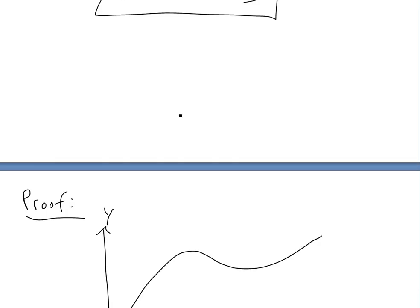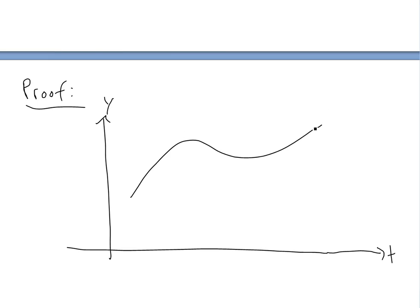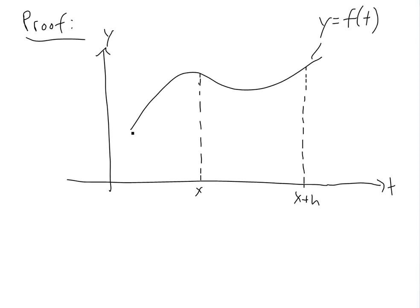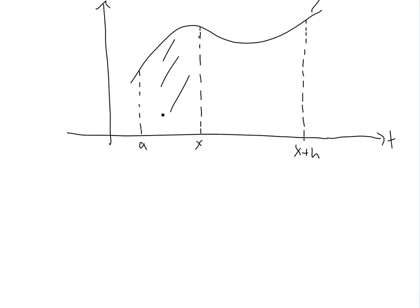Okay, so now to prove it, I'll draw this graph. We'll call this y equals f(t) — I'm using t instead of x because we're going to use x as the variable inside the integral. So if you have a point, we'll call this point x, and we'll call this point x plus h. Now what I'm going to do first in the proof is look at the integral: g(x) is the area from a to x, and if we extend it all the way out to x plus h, it's going to be g(x+h).